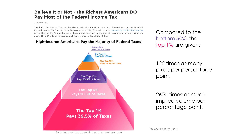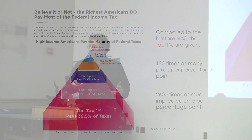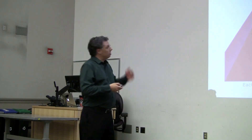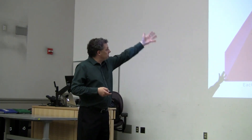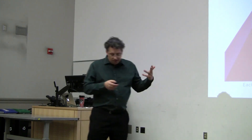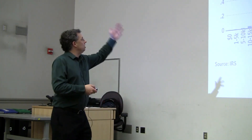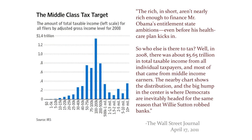But you shouldn't just count pixels, because we're viewing this as a 3D object and thinking in terms of volumes. If you compute the actual volumes of these sections, each percentage point of tax paid by the top 1% has 2,600 times as much implied volume as a percentage point paid by the bottom 50%. That's a very different story — and very deeply misleading because of how it's represented.